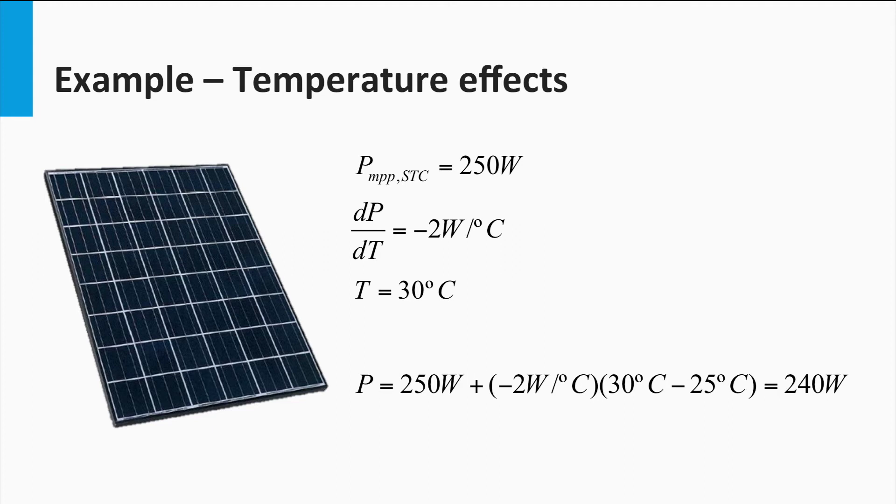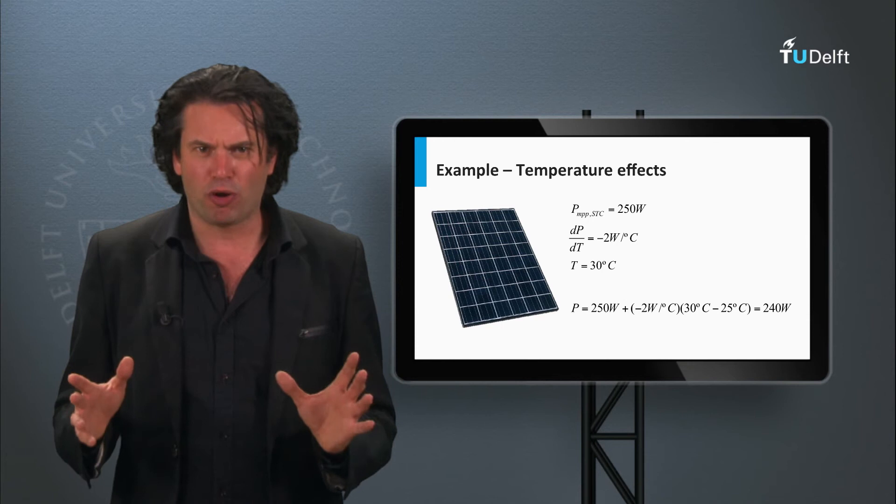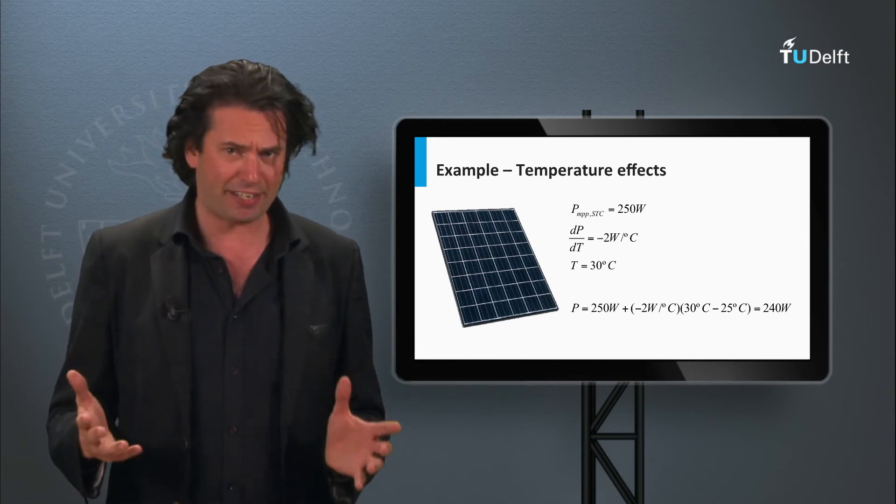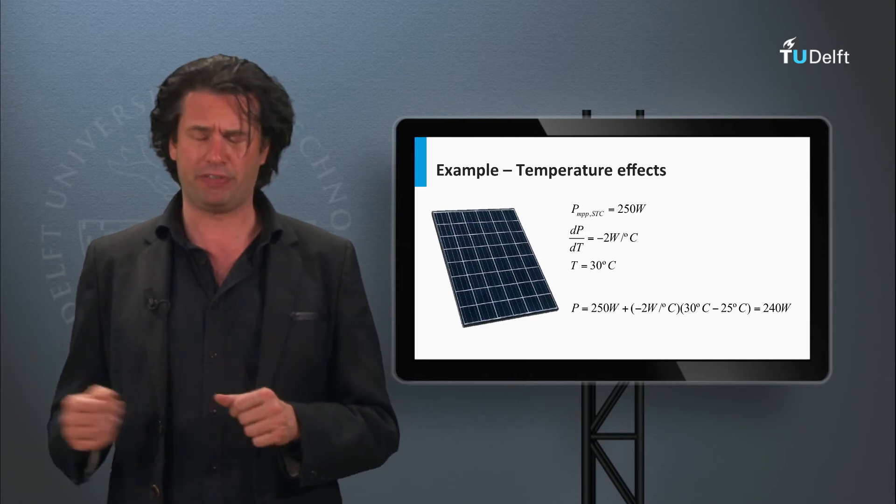As you can see, the sign of the temperature coefficient determines if the parameter is increasing or decreasing with temperature. In the exercises for this block, you will be able to use this equation to estimate the effect of temperature on the various PV parameters.